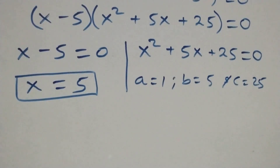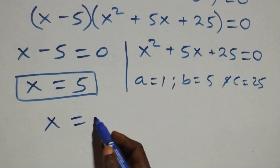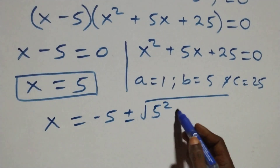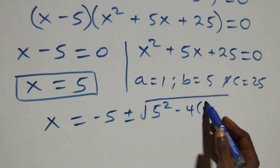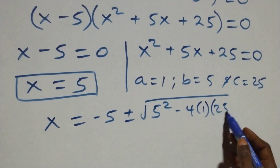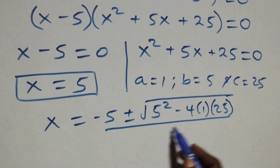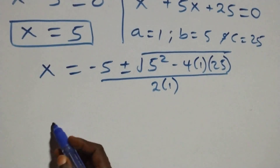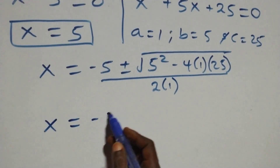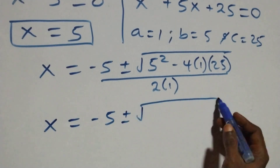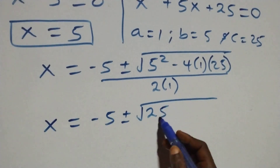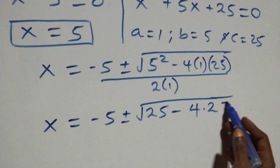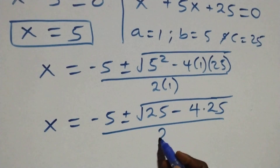Also applying the quadratic formula, we have x equals to minus 5, plus or minus square root of 5 squared minus 4 times 1 times 25, then over 2 times 1. This becomes x equals to minus 5, plus or minus square root of 5 squared, that's 25, then minus 4 times 1 times 25, we can put it as 4 times 25, all over 2.